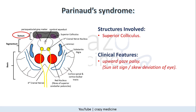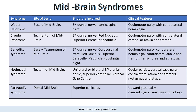The last midbrain syndrome is Parinaud syndrome. The structure involved is the superior colliculus, which will cause upward gaze palsy. It is also known as sunset sign and skewed deviation of the eye. This is the most important slide for midbrain syndromes — it includes syndromes, site of lesion, structures involved and clinical features. You can take a screenshot of this slide and revise just a day before the exam; it will be very helpful to solve MCQs quickly.